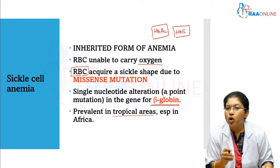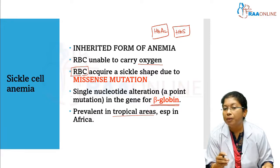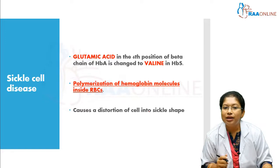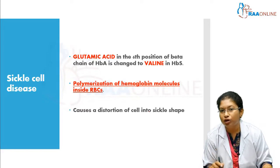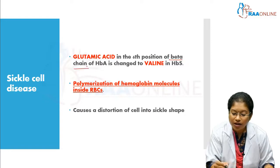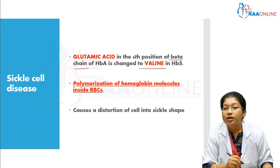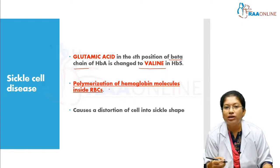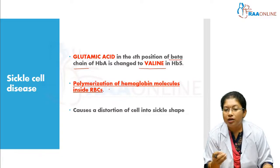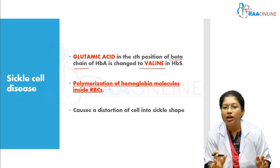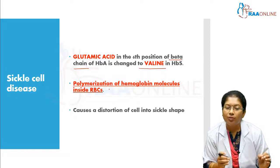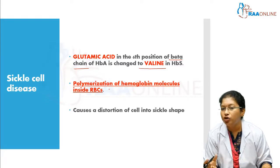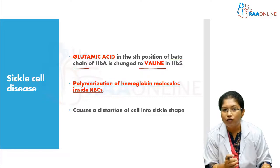Sickle cell anemia is caused by a point mutation in the beta globin chain and not the alpha. In sickle cell disease, glutamic acid in the sixth position of the beta chain is changed to valine in sickle cell hemoglobin. This causes polymerization of hemoglobin molecules inside the RBC, causing distortion of the cell into sickle shape. The normal biconcave shaped RBC is changed to sickle shaped RBC.